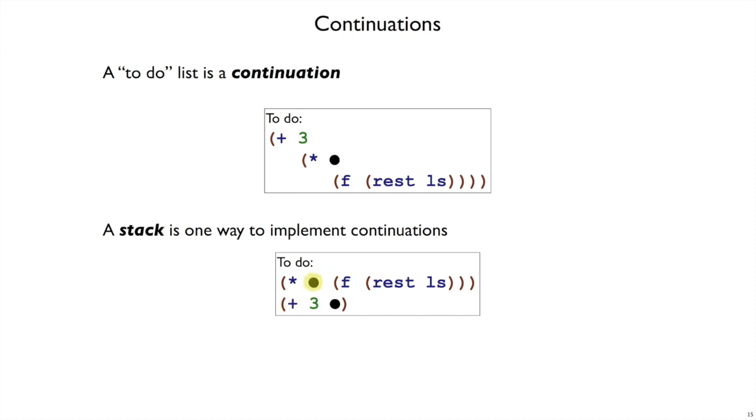That is, once we get a value here, start to continue working on the multiply, and once this multiply turns into the value, later we'll do the plus. It's the same information in these two boxes, just putting it in a list form makes it easy to manipulate the part that we're currently working on.